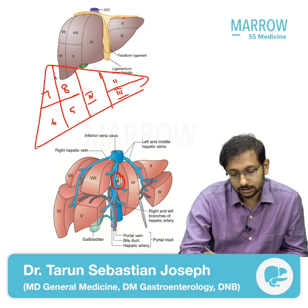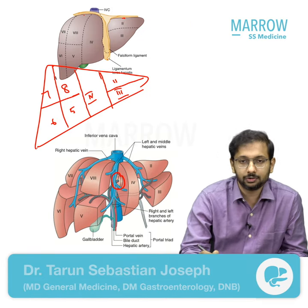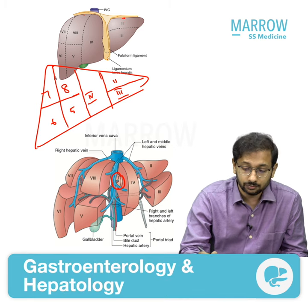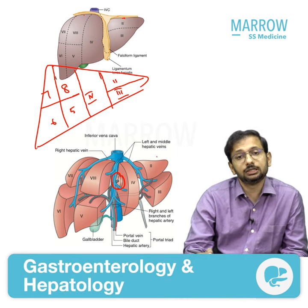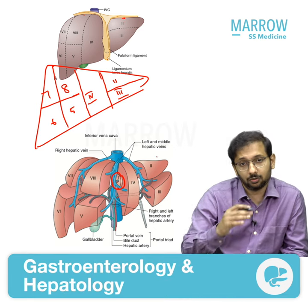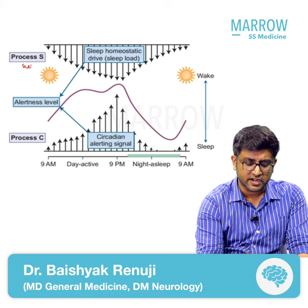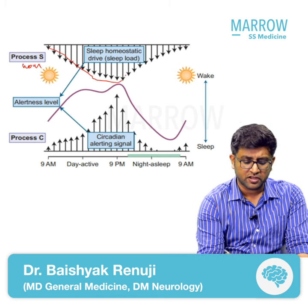There are three hepatic veins: the right hepatic vein, middle hepatic vein, and the left hepatic vein, which help in the division of the liver. This is what we use in the CT scan to divide the liver.